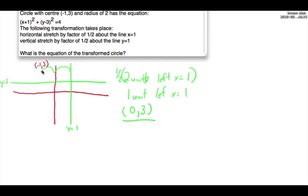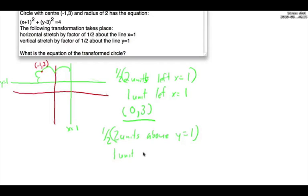Now let's look at it vertically. The center coordinate is 2 units above y equals 1 — since y equals 3 and the reference line is y equals 1. We know that the vertical stretch is by half, so we multiply that by half. Therefore the transformed center should be 1 unit above where y equals 1, which is 2. So the new transformed center is going to be 0 and 2.